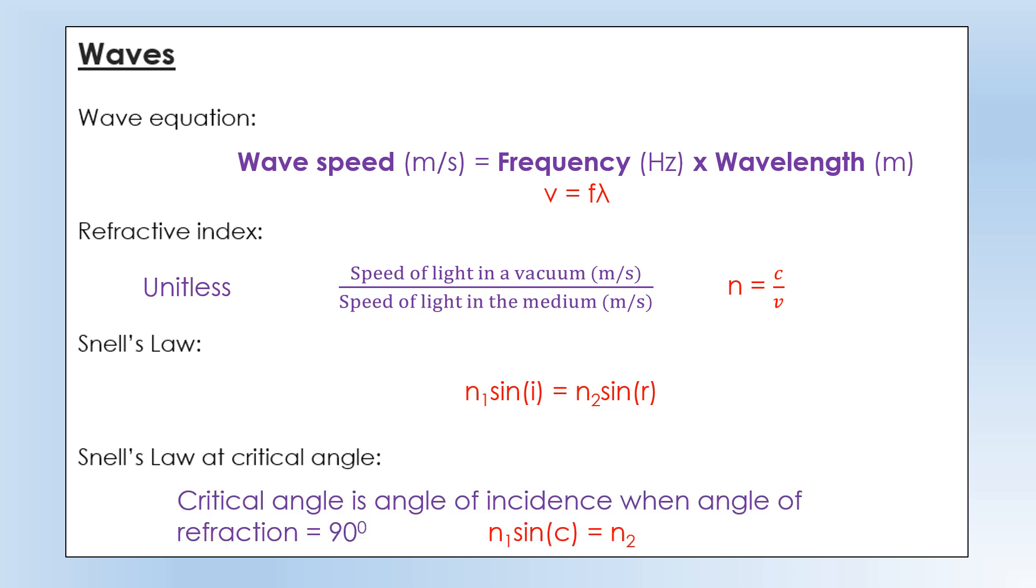At a critical angle, critical angle is the angle of incidence when the angle of refraction is 90 degrees. Sine of the angle of refraction becomes 1 because sine of 90 is 1. And then the angle of incidence is the critical angle. So if you know N1 and N2, you can calculate what the critical angle is.